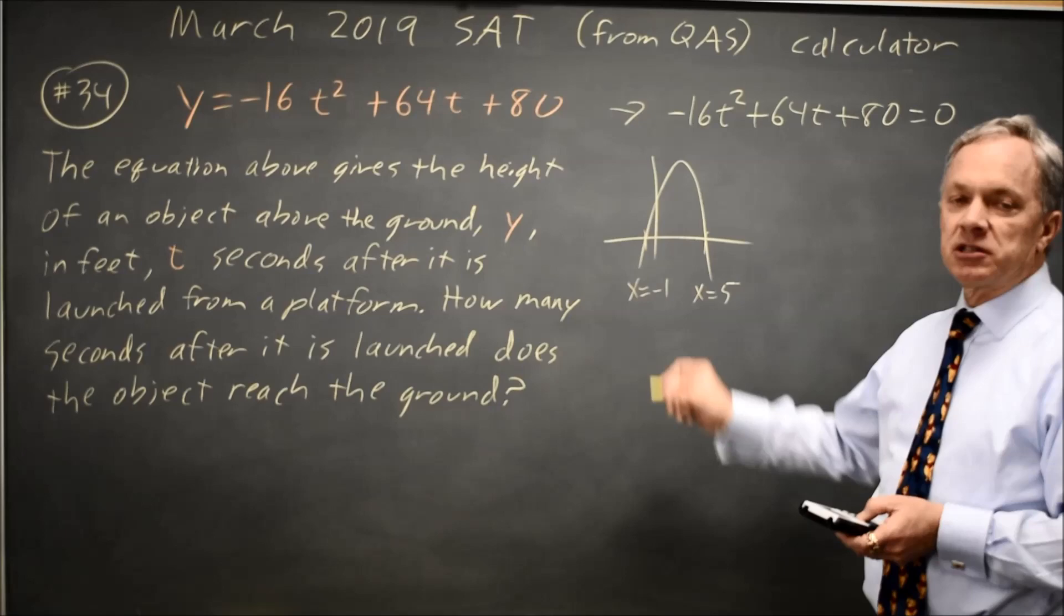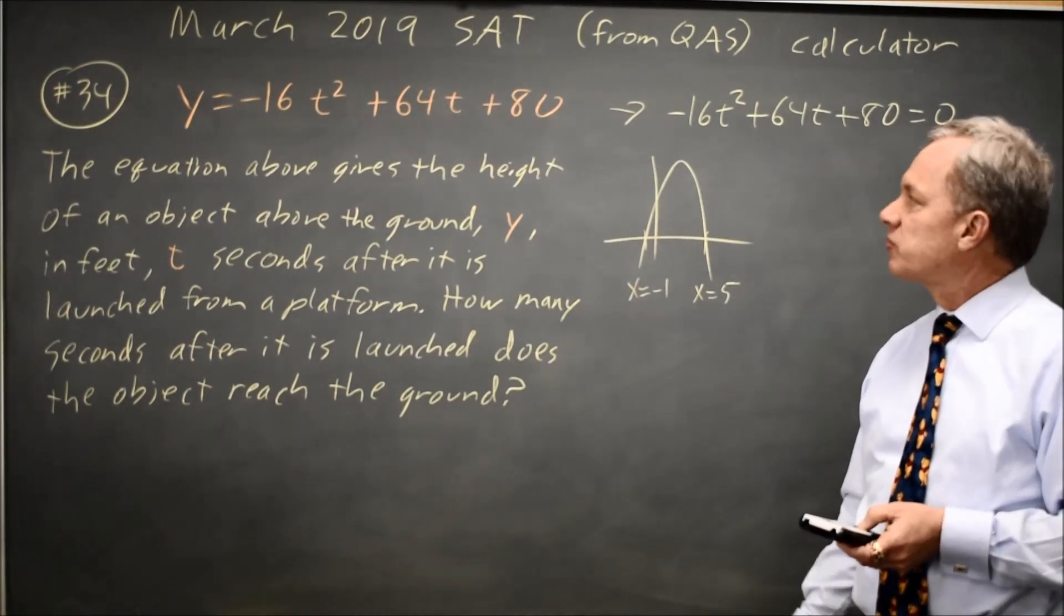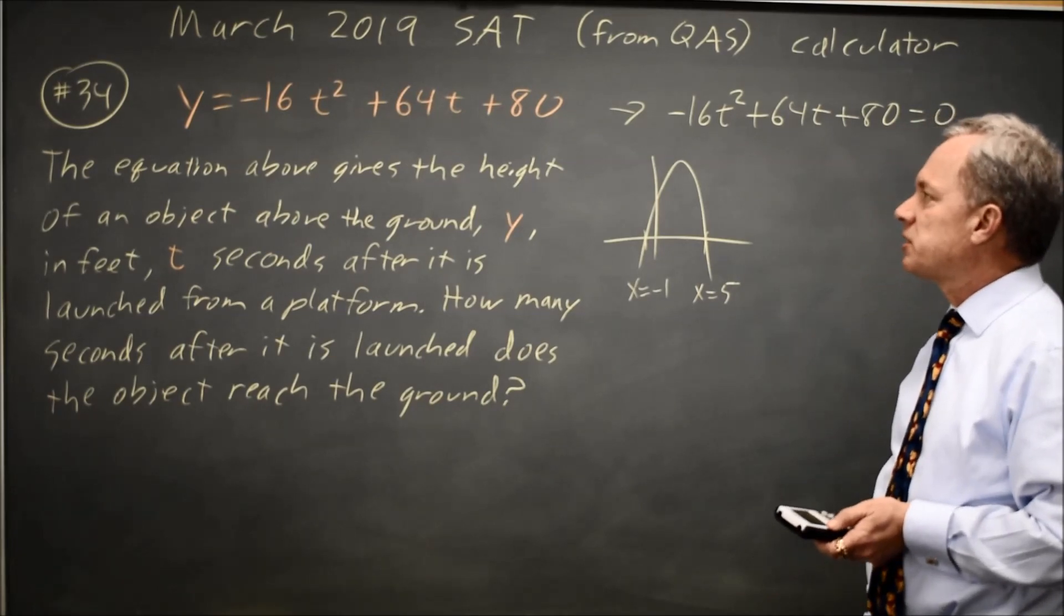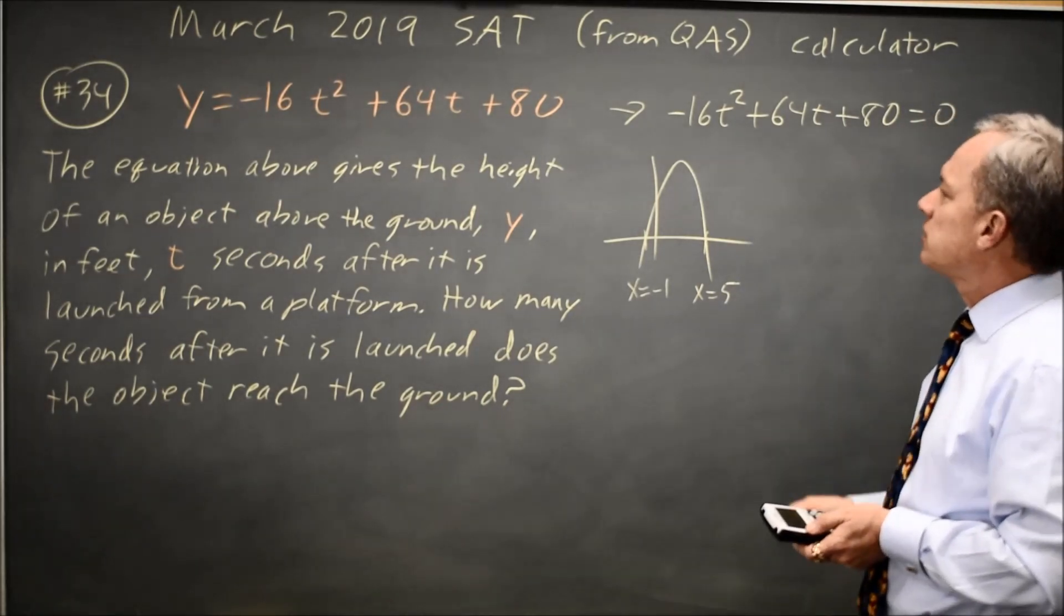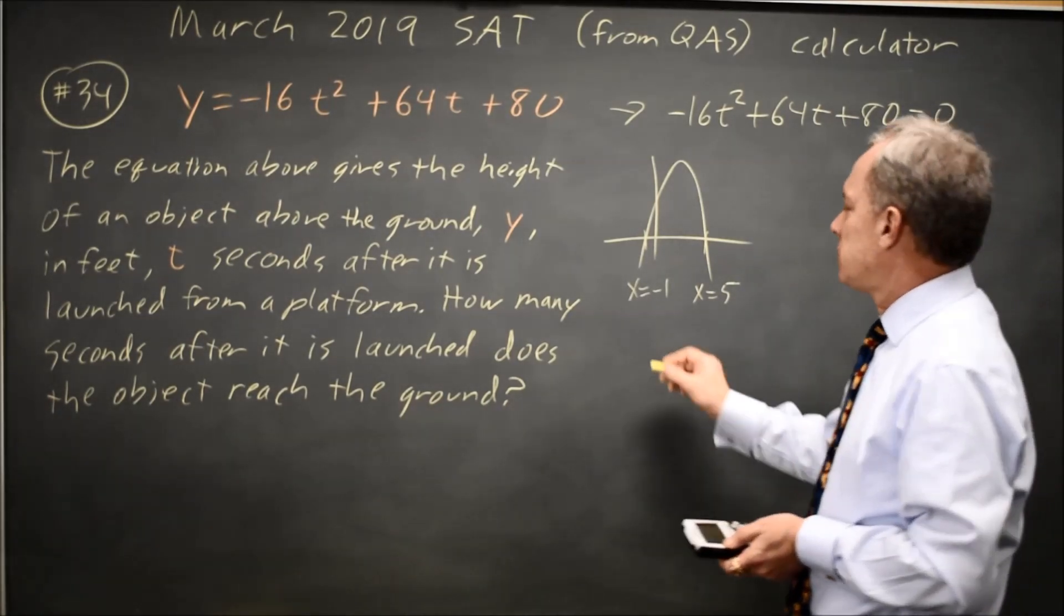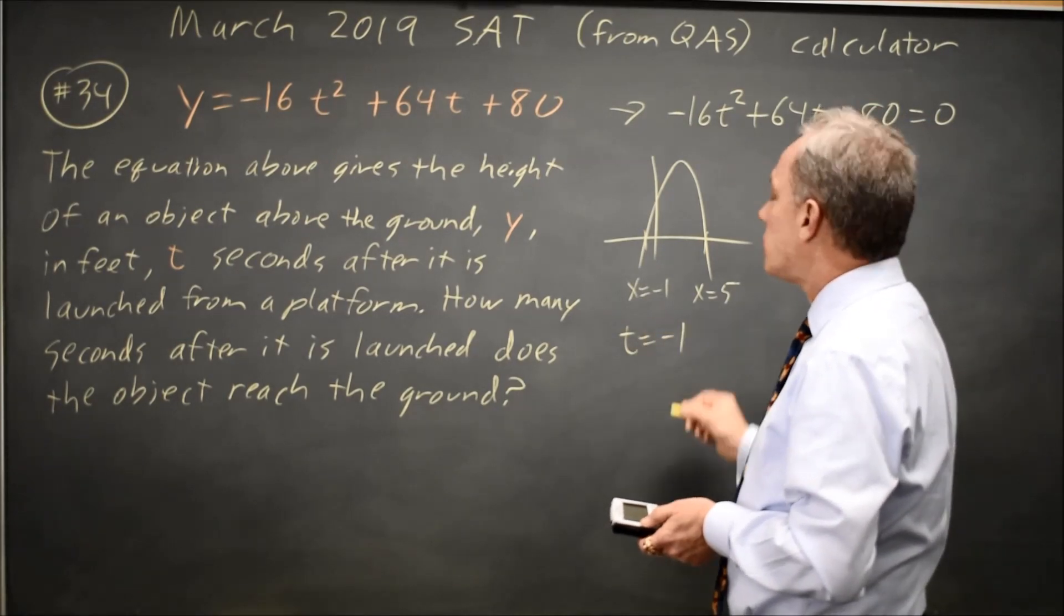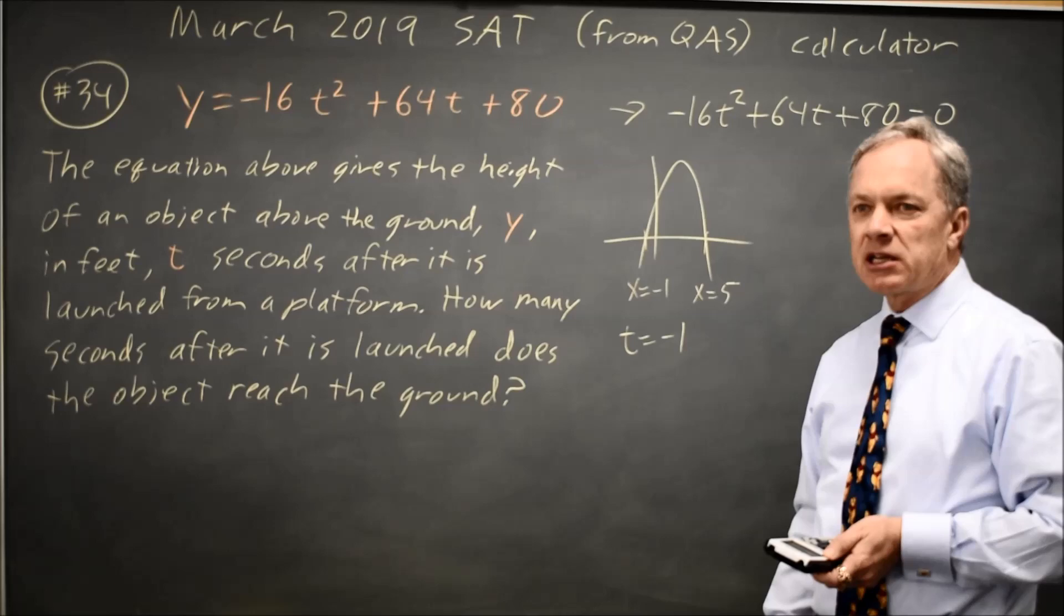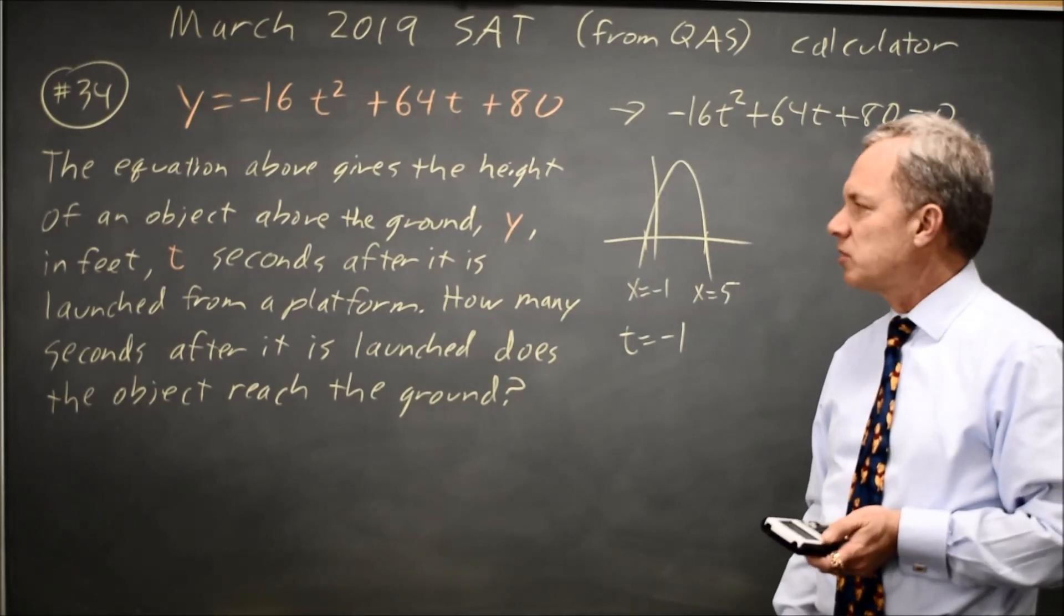Since the x-intercepts are at negative 1 and positive 5, where I've typed in x for t, that means the times the object is at the ground, according to the math, are t equals negative 1, which, first of all, we can't grid in a negative number, so that's wrong. Second, I don't believe the rocket hit the ground before it was launched.